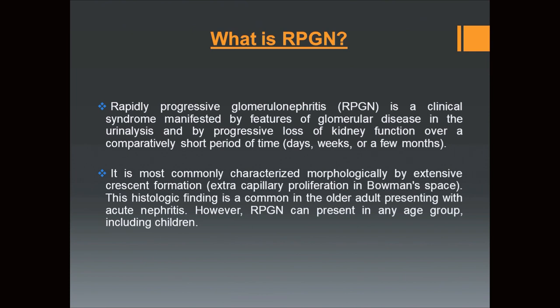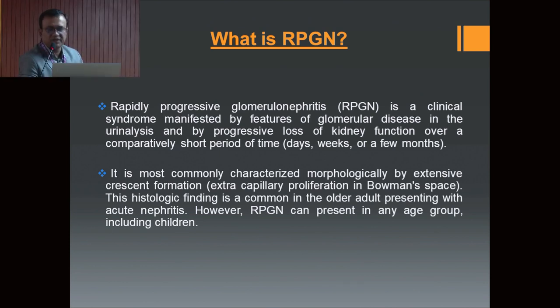Rapidly progressive glomerulonephritis is a clinical syndrome manifested by features of glomerular disease on urinalysis and by progressive loss of kidney function over a short period of time. It is most commonly characterized morphologically by extensive crescent formation. These histopathological findings are common in older adults presenting with acute nephritis. However, RPGN can present in any age group, including children.